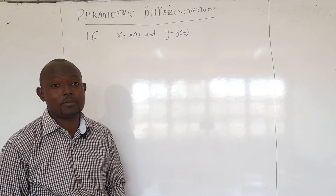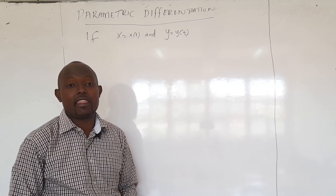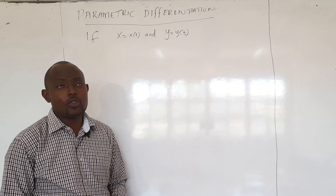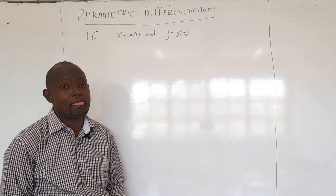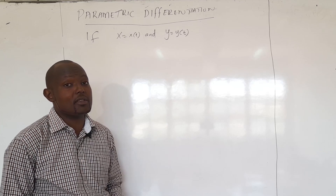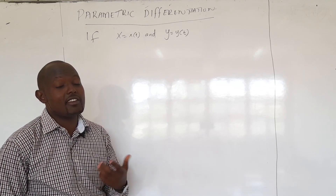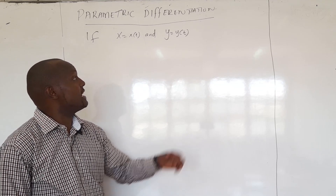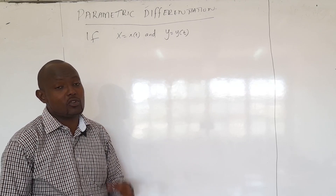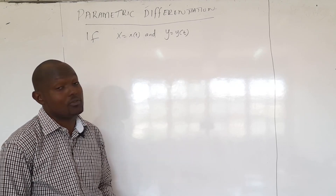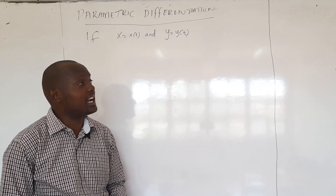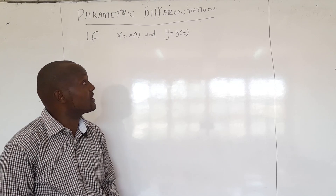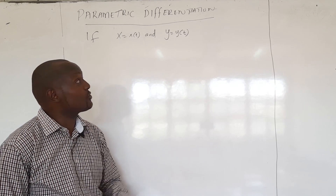Earlier we looked at how we differentiate other functions — polynomial, trigonometric, and all those kinds of functions. Today we are going to look at parametric differentiation. In this case we may need knowledge from previous classes. If you are given two functions of T, you may be asked to get the derivative of one function with respect to the other, regardless of whether it is trigonometric or exponential.